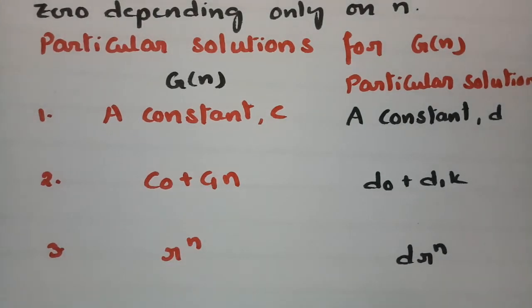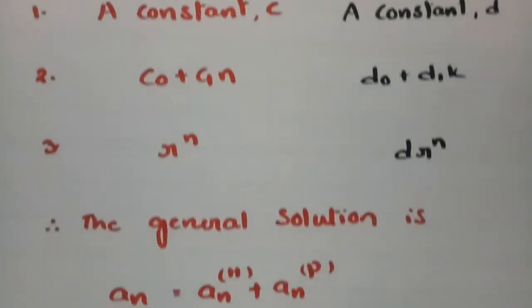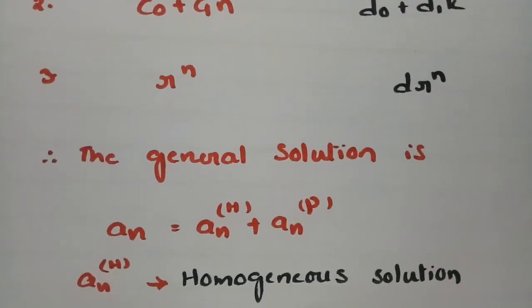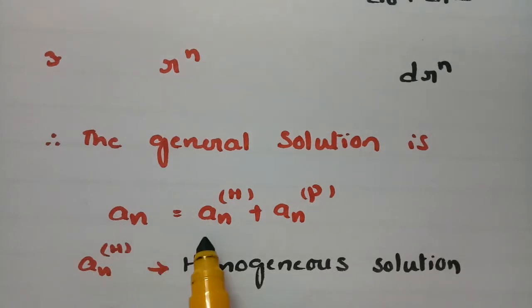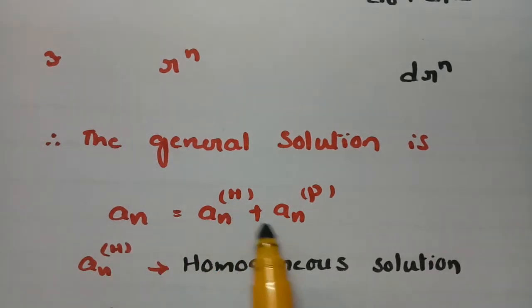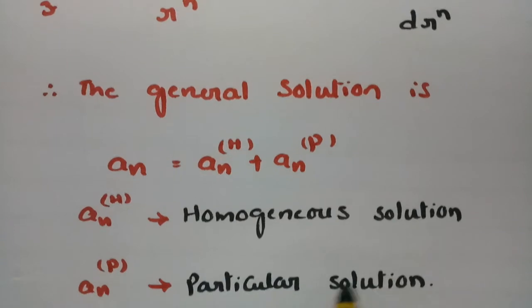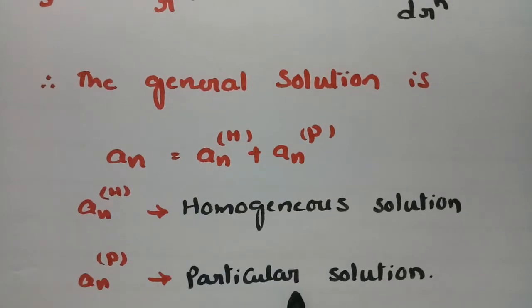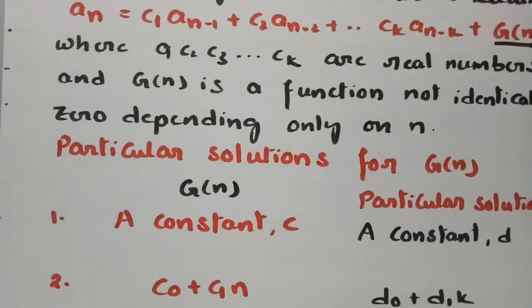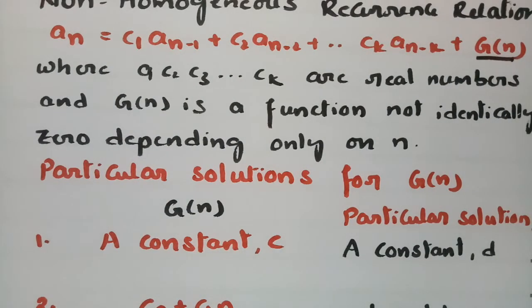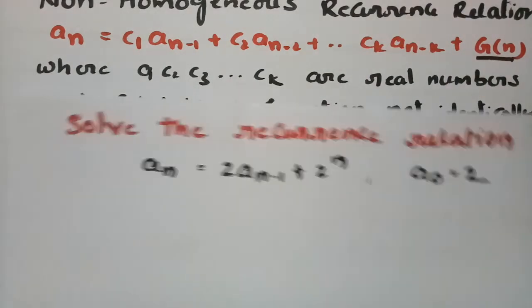Using these assumptions we find the particular solution, and then the general solution is aₙ = aₙ⁽ʰ⁾ + aₙ⁽ᵖ⁾, where aₙ⁽ʰ⁾ is the homogeneous solution and aₙ⁽ᵖ⁾ is the particular solution. Now let's solve one problem of this type.